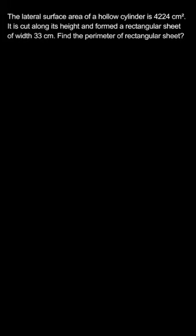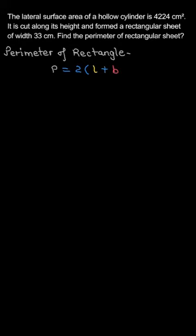We can compare the lateral surface area of the hollow cylinder with the area of the sheet. Area of the sheet is length into breadth. So we can write perimeter of rectangle P = 2(l + b).